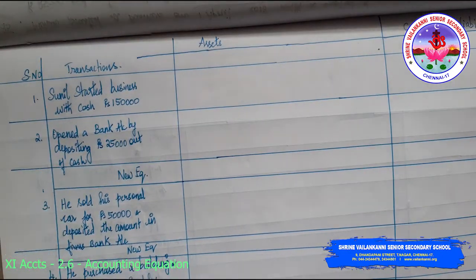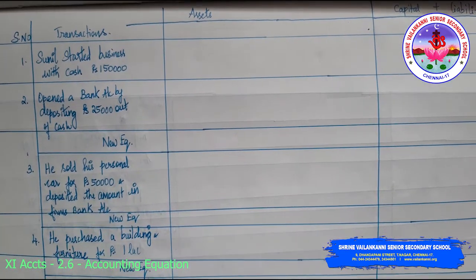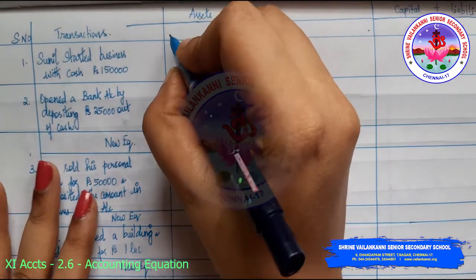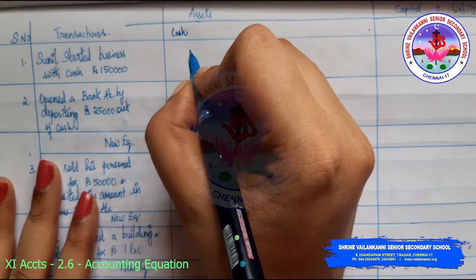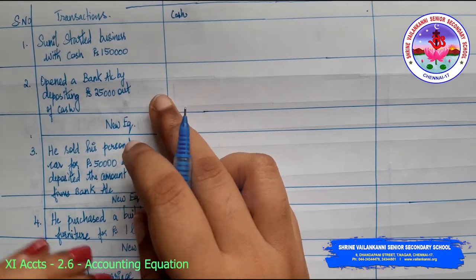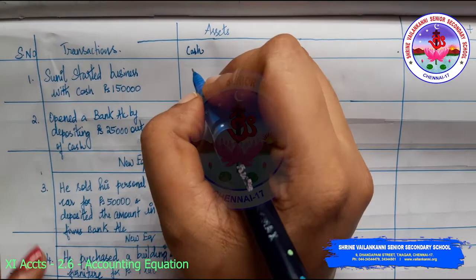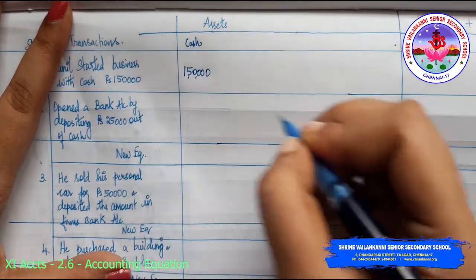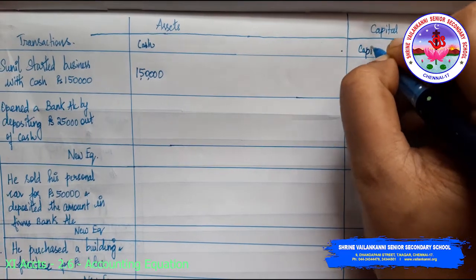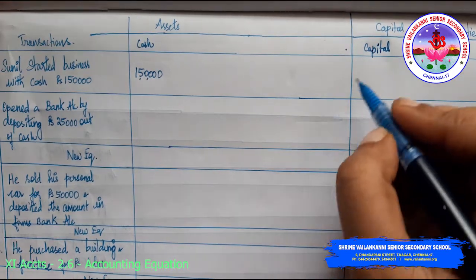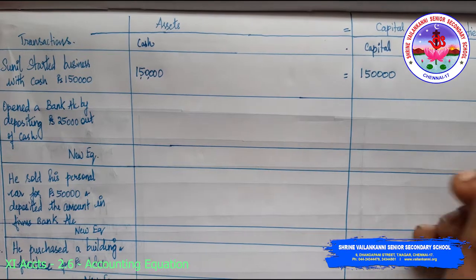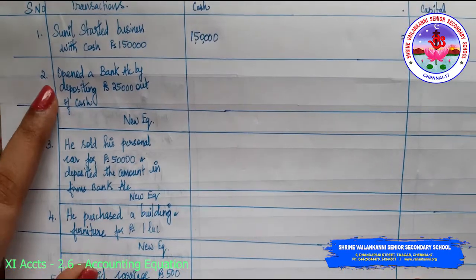I want you all to pause the video, start copying this format and the transactions given. First transaction: Sunil started business with cash. Cash is coming in, so you'll have cash — how much cash is coming into the business? It is 1 lakh 50,000. I'm writing it under cash, and since he started business, it should be capital. So in the capital side I'm writing capital as 1 lakh 50,000. There's no other entry, so 1 lakh 50,000 equals 1 lakh 50,000 — accounting equation tallied.